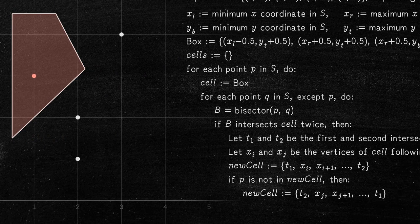We then repeat the same procedure with the other points, collecting all Voronoi cells in the diagram.